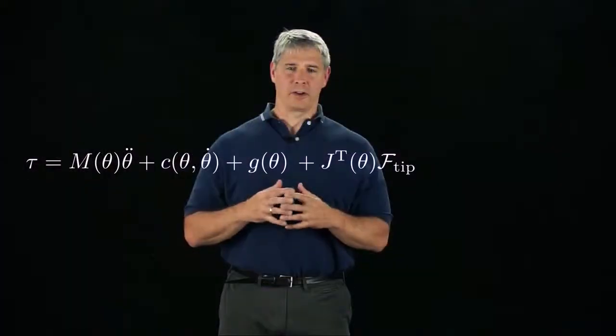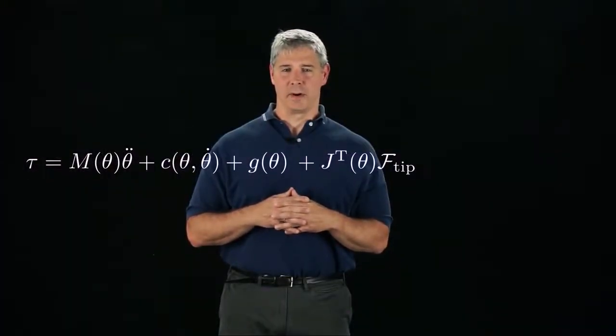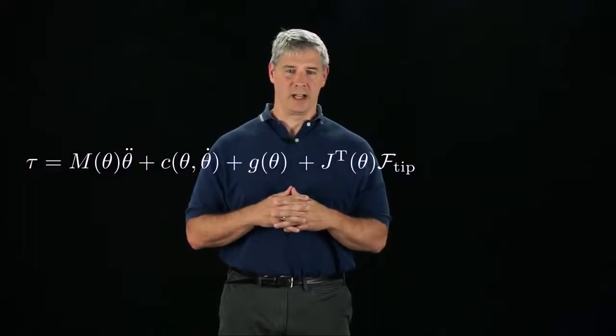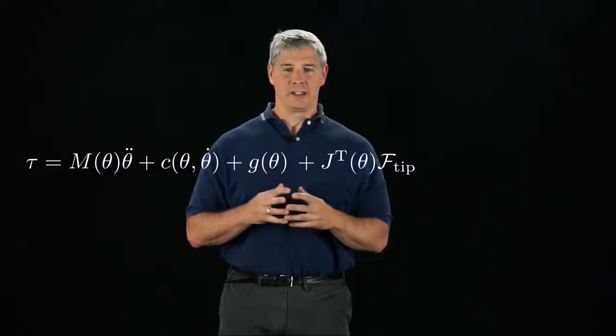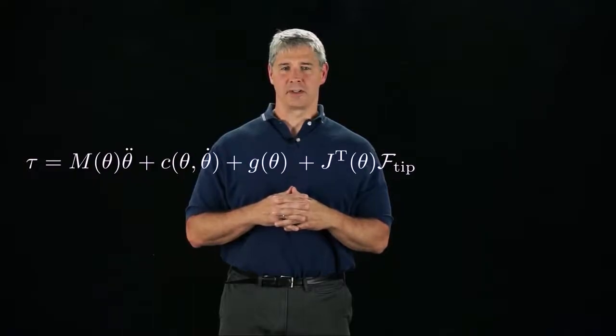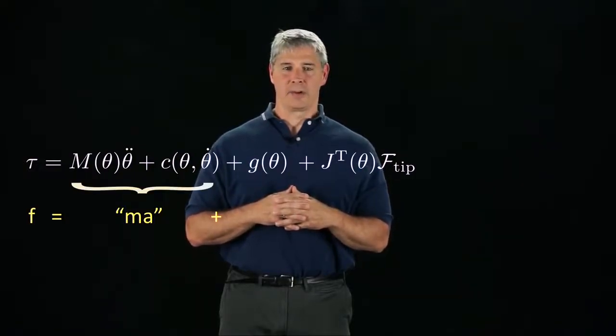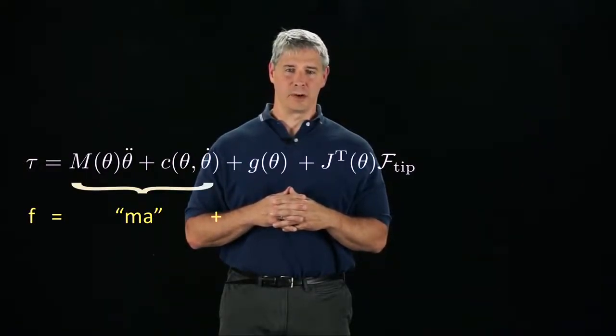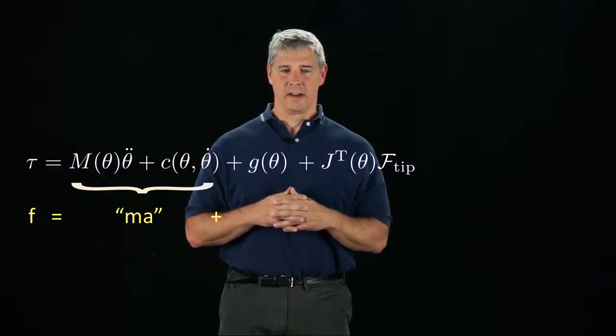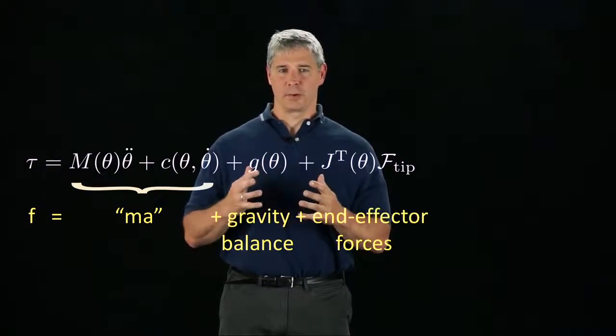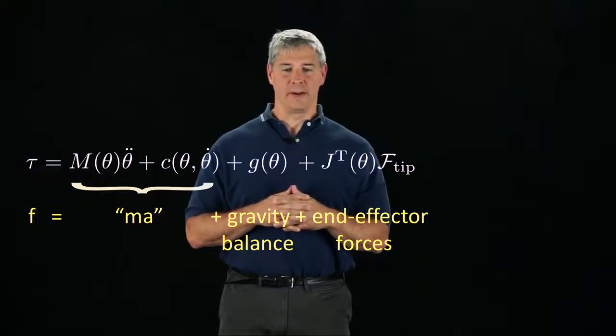You should now have a good understanding of the form of the dynamic equations of a robot, including the mass matrix and velocity product terms. Intuitively, these equations of motion are just f equals ma, where the ma term depends on both the joint velocities and accelerations, plus forces to balance gravity, plus forces to create the desired wrench at the end effector.